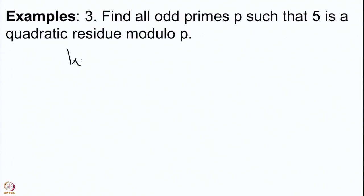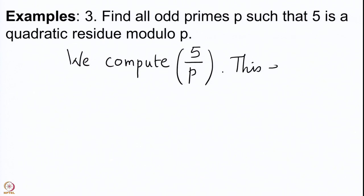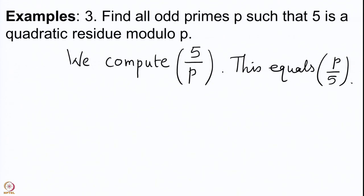We compute the Legendre symbol (5/p). Since 5 is congruent to 1 modulo 4, the third law of quadratic reciprocity tells us we can switch the places of p and 5 without changing the sign. So this equals (p/5). This is easy to compute because now we go modulo 5, and there are 4 numbers 1, 2, 3, 4, and we need to see which are squares modulo 5.